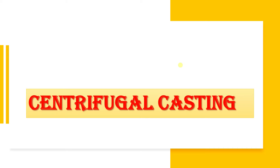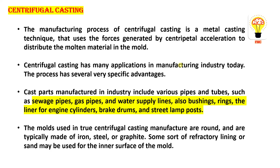So how to make those things perfectly in a casting process? That can be manufactured by centrifugal casting. As you can see, I've highlighted in yellow: sewage pipes, gas pipes, water supply pipes, street lamp posts — hollow sections — can all be easily manufactured by centrifugal casting.